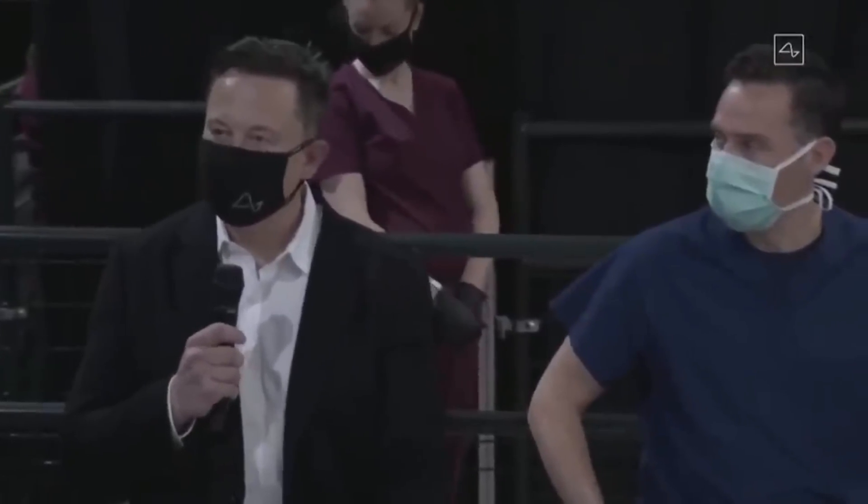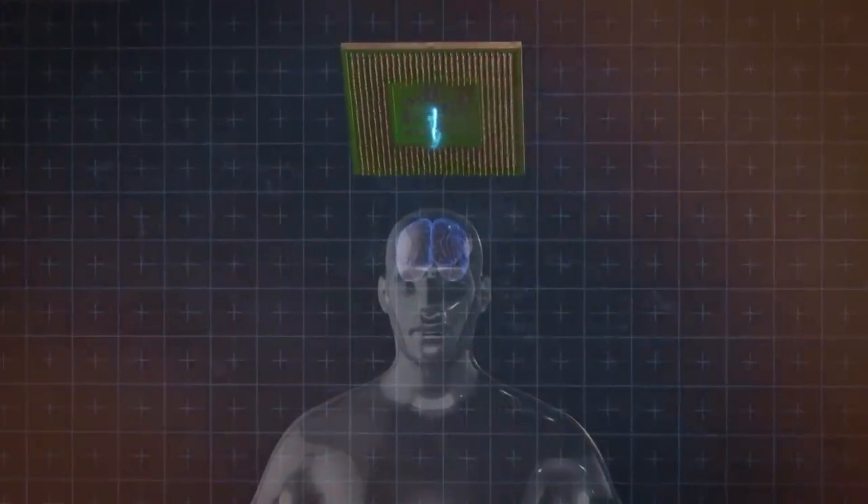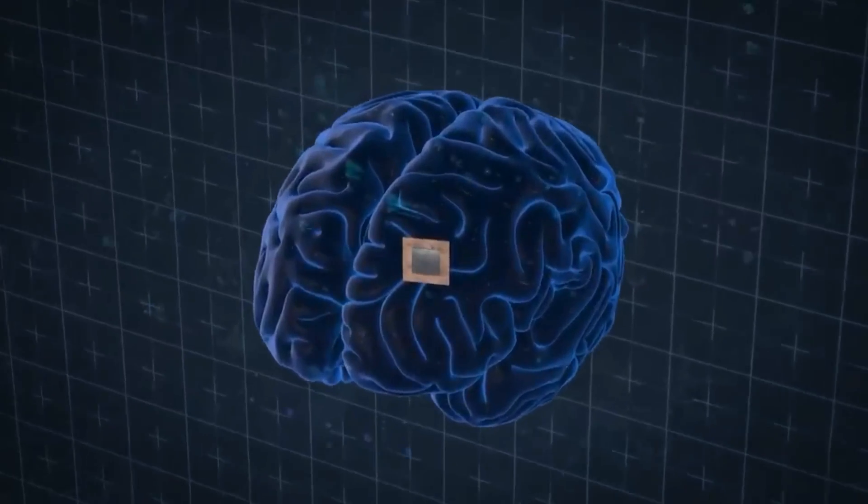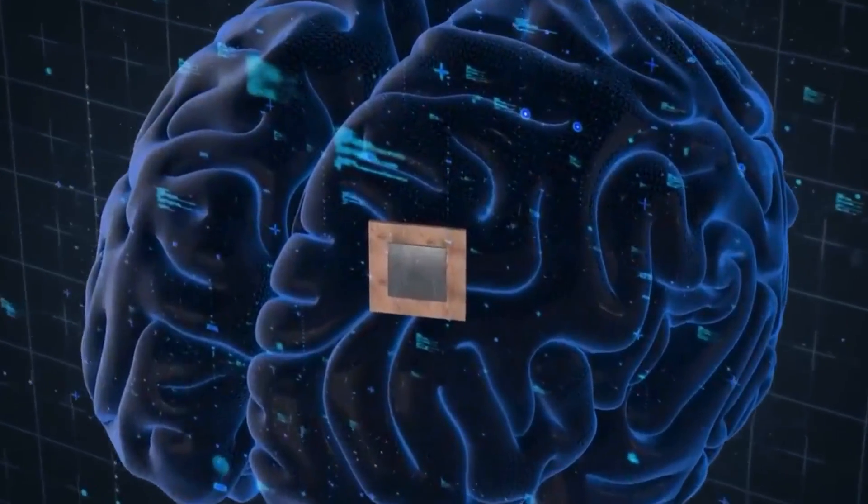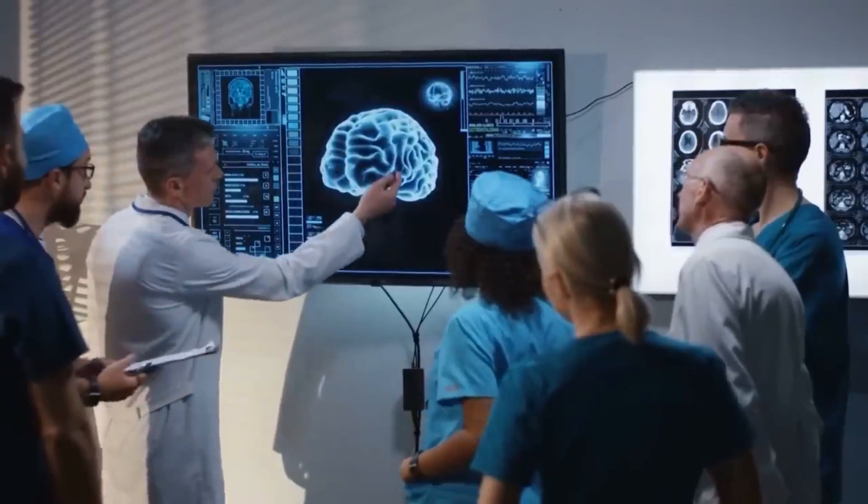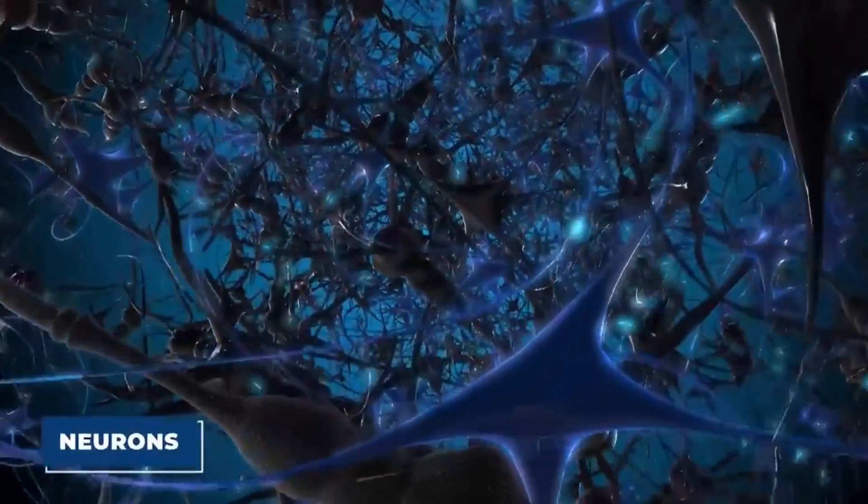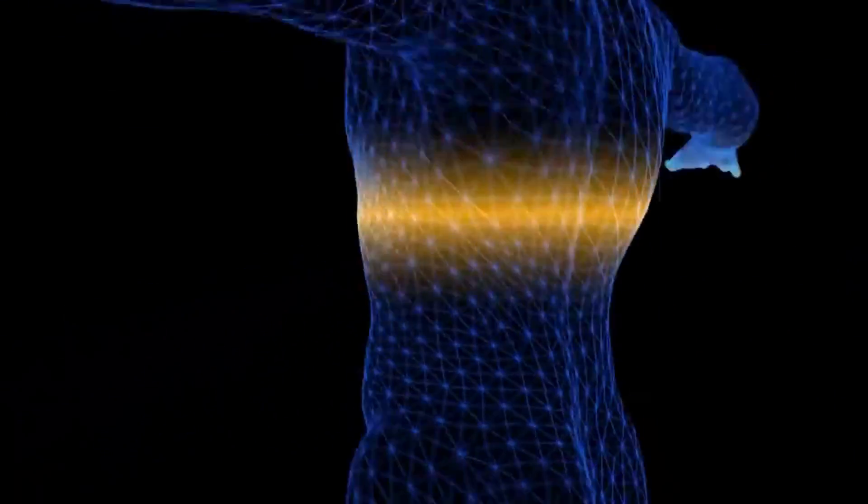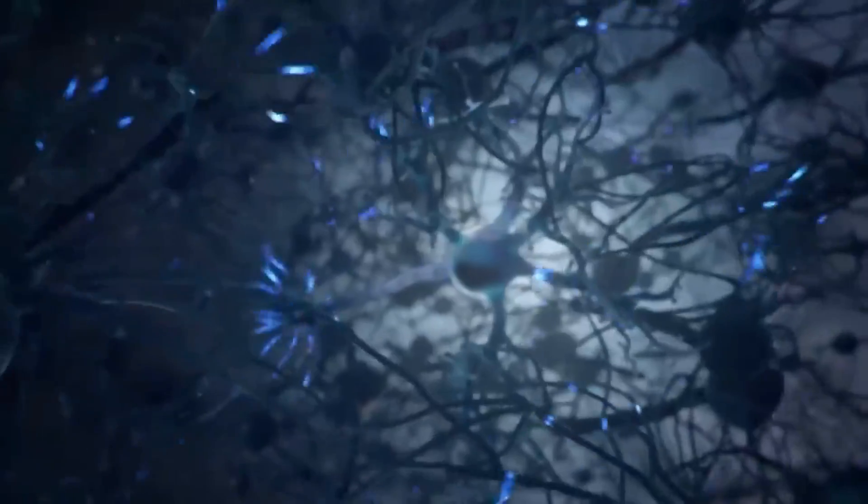You may be wondering how will this chip interact with the brain? To understand this, it's important to first understand how the brain itself works. The brain is made up of billions of neurons that are linked together by thin fibers called axons. When a person thinks, feels, or moves, it's due to electrical signals sent between neurons.